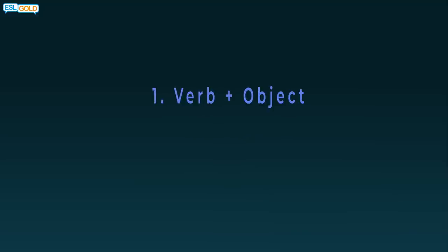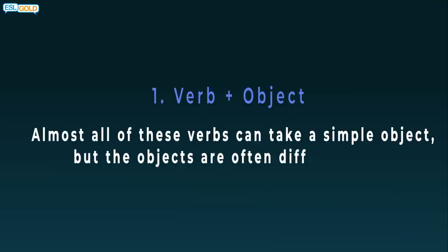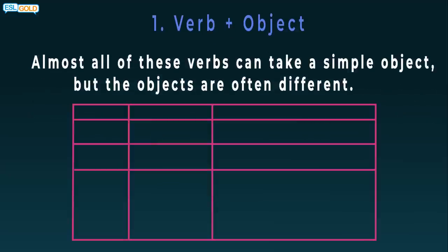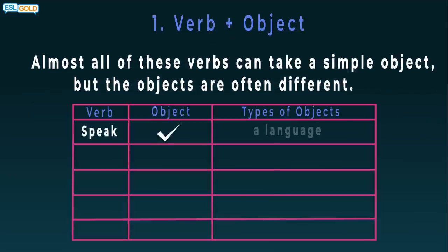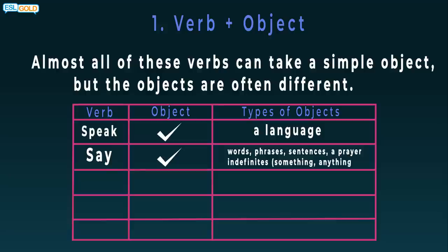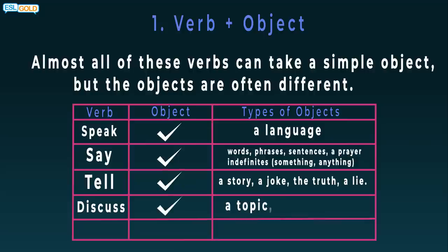Number 1: Verb plus object. Almost all of these verbs can take a simple object, but the objects are often different. See the examples below. Speak: yes, a language. Say: yes, words, phrases, sentences, a prayer, indefinites such as something or anything. Tell: yes, a story, a joke, the truth, a lie. Discuss: yes, a topic, indefinites. Talk: yes, but this is not common. Nonsense.